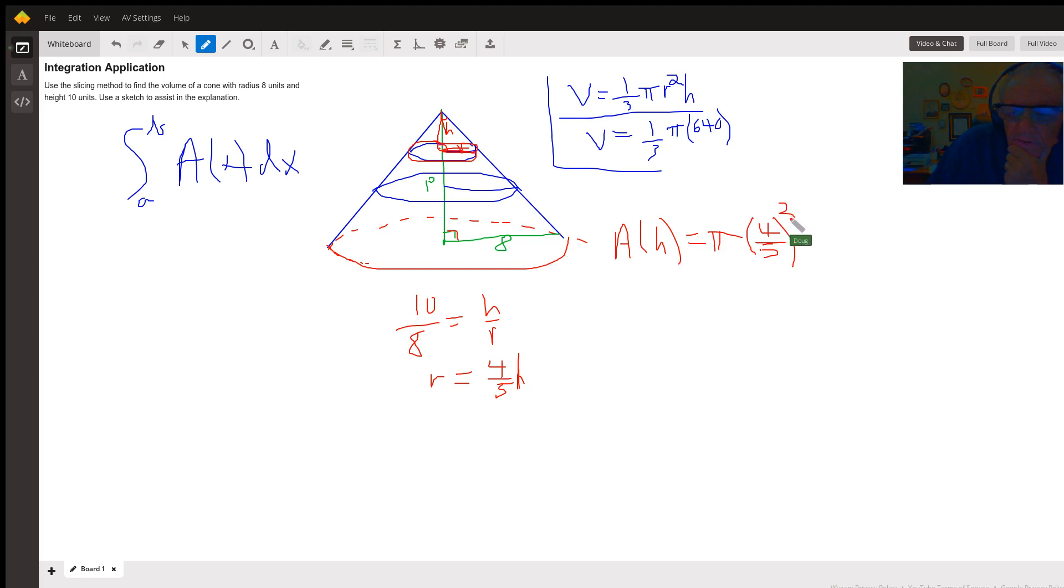The quantity squared is 16 25ths pi h squared.